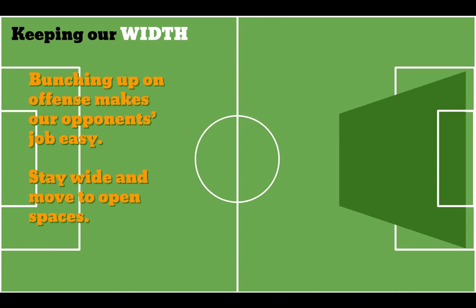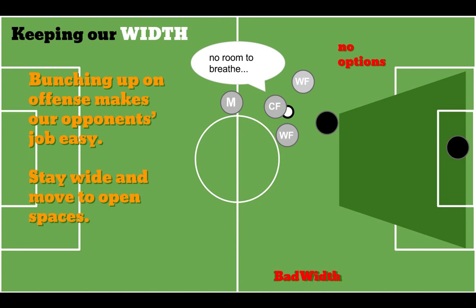We'll start with width. We want to keep our width — what we mean by that is we don't want to bunch up when we're on offense. Because when we bunch up, when we have too many players in a small space, we make it very easy for the defenders trying to stop us. We close off our opportunities. Let's take a look at an example on the board where our center forward has the ball in an attacking position. She wants to move forward, and there's one defender between her and the goalie — a great opportunity. But what we see a lot in rec soccer is that everyone runs to the ball, and we end up with wings and a midfielder all in the same place. That's bad width.